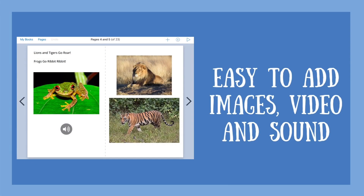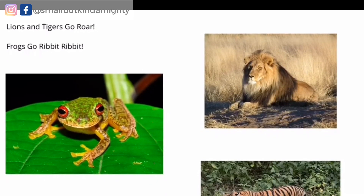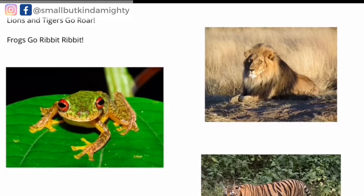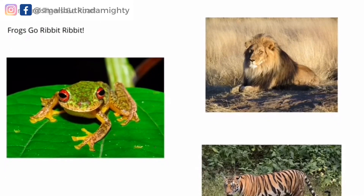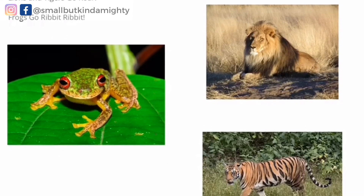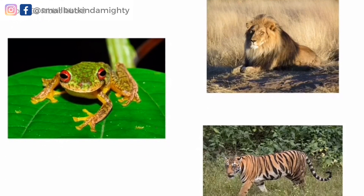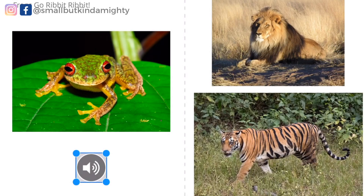All the images in this book were either photos Owen had on his iPad, or he did an image search to find and save the image he wanted to use. If it's on the camera roll, then you can add it, or you can just take a picture and use that. You can also record sound within Book Creator. Owen found the sound of a frog on YouTube and we recorded that within his book.